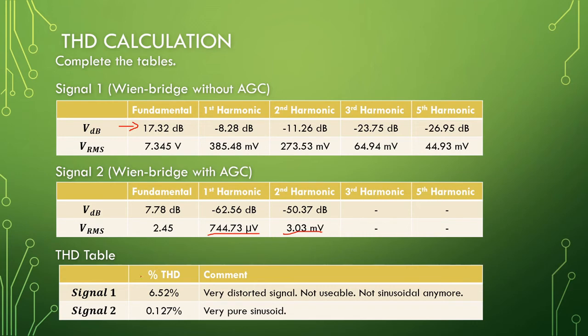If you have these values, you plug them into your THD equation and for signal one you should get 6.52 percent.